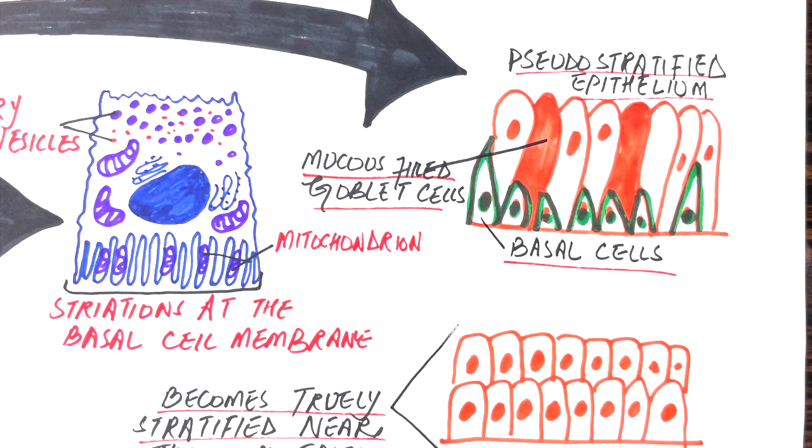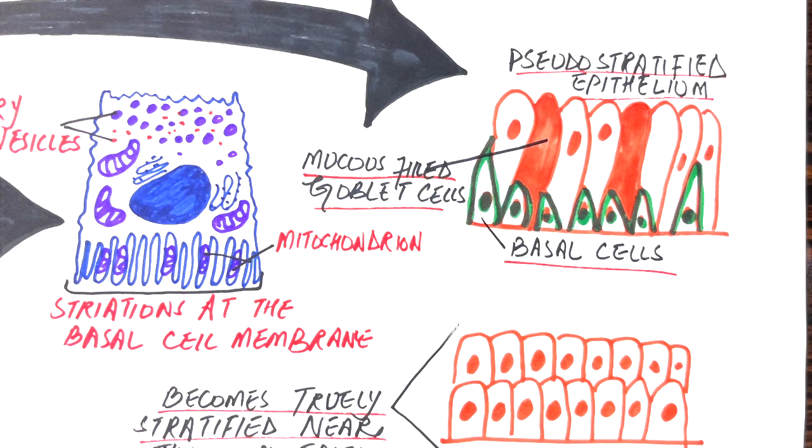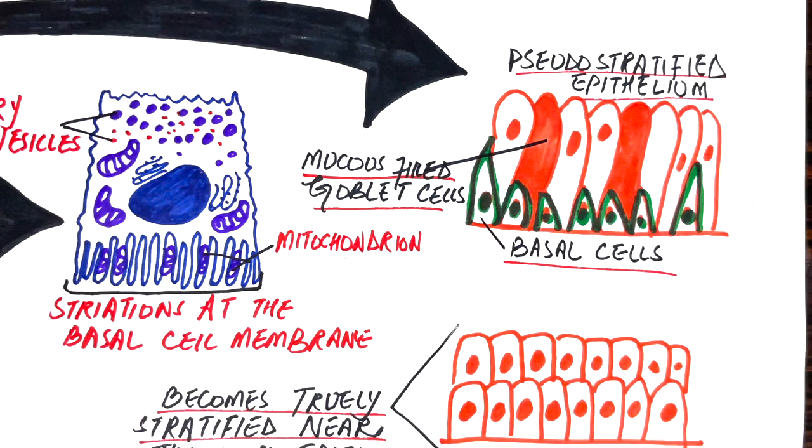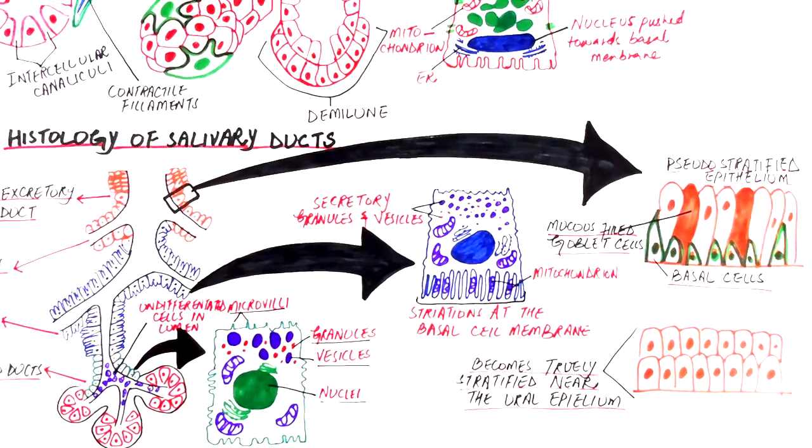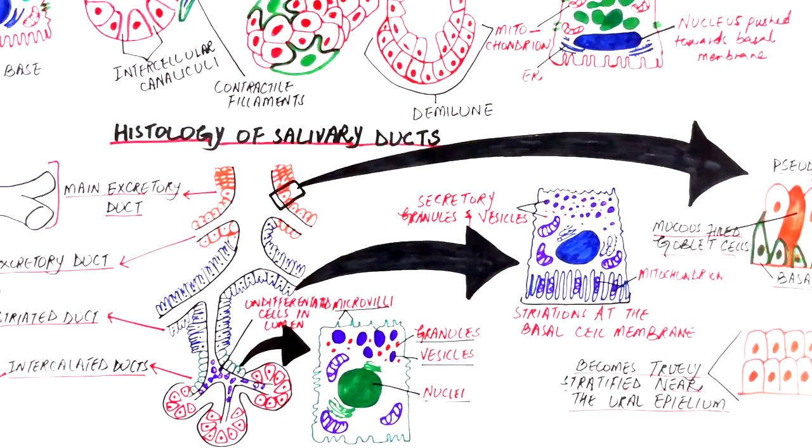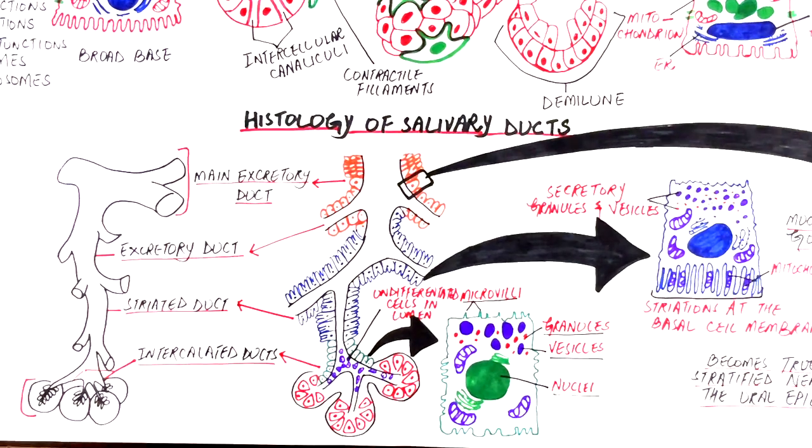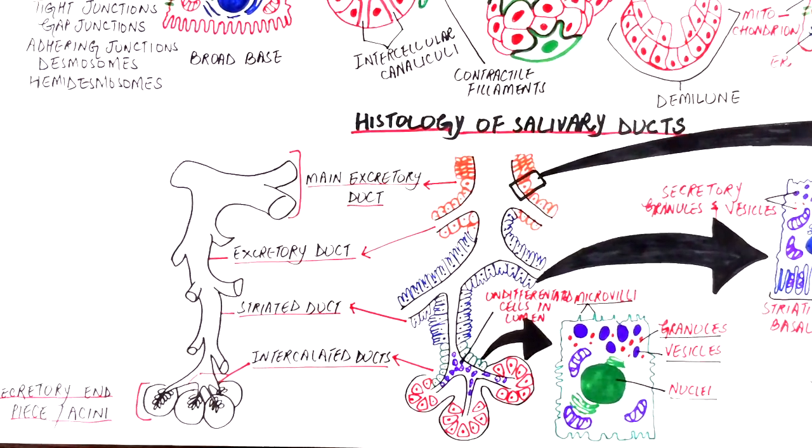The structure of the columnar cells in the small excretory ducts almost resembles the striated ducts. But as it increases in size, the number of mitochondria and the extent of infoldings of the basolateral membrane decreases. Both the columnar and basal cells have a high proliferation rate. I hope this video helps.